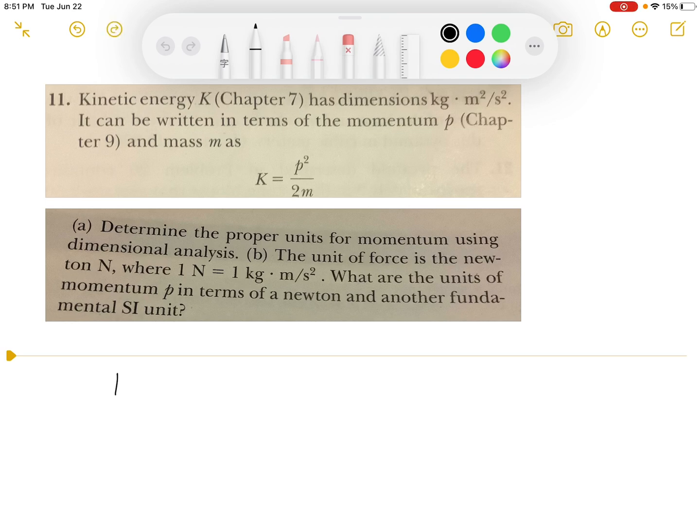The equation given is K, kinetic energy, equals momentum P squared over 2m. First, we can isolate the momentum P. We will get P equals square root of 2mK, and K we can write in another expression.